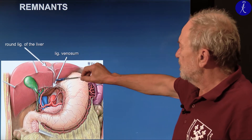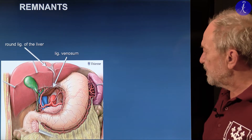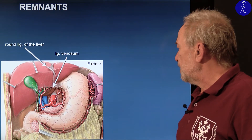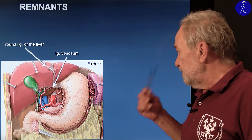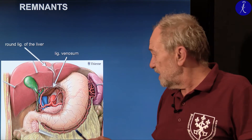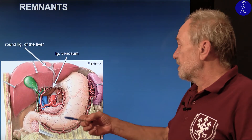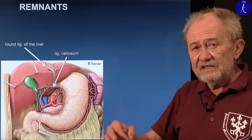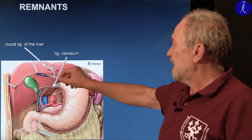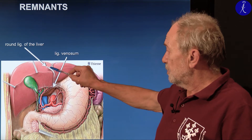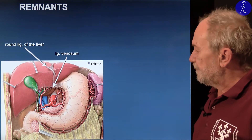Some of these vessels remain after birth, and you will see their remnants in the body. One is the round ligament of the liver — ligamentum teres hepatis — which is the remnant of the left umbilical vein. People often confuse the remnants of umbilical artery and vein, but if you remember there was only one umbilical vein, a single structure should correspond to it. Since this umbilical vein connected the umbilicus with the developing liver, the round ligament behaves the same — leading from the umbilicus to the porta hepatis. This is the obliterated left umbilical vein.